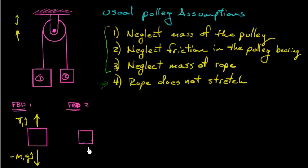And we're going to do the same thing for block number 2. It has its own weight, minus M2G J-hat direction, and it has a tension. And since it's the tension on block number 2, I'm going to call it T2 in the J-hat direction.